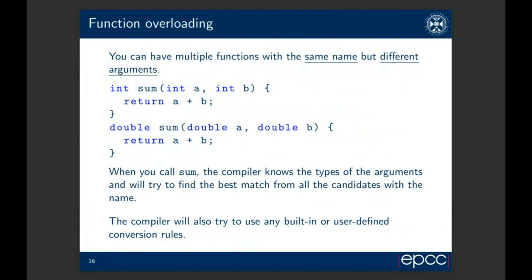Function overloading is used everywhere throughout C++. You can have multiple functions with the same name but taking different numbers or types of arguments. For example, two sum functions: one accepting two integers and the other accepting two doubles, both returning the sum of the two values. At the call site, the compiler knows the types of the arguments and will try to find the best match from all candidates with the same name, using any built-in or user-defined conversion rules for casting values of different types.